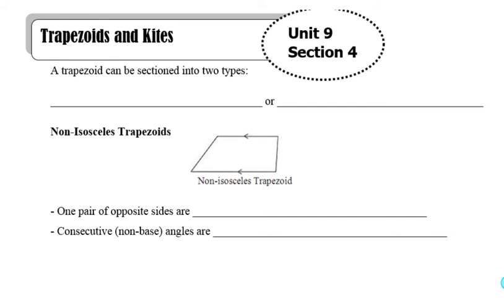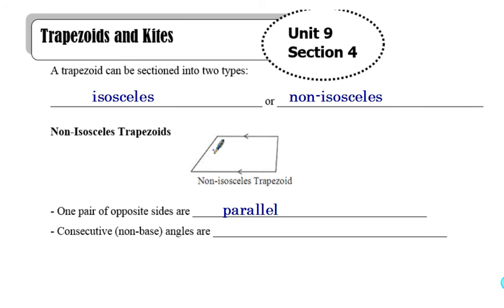A trapezoid can be broken up into two types: an isosceles trapezoid and a non-isosceles trapezoid. A non-isosceles trapezoid is when you have one pair of opposite sides that are parallel, and then you have two sides known as the legs, and the legs are not congruent to each other. That's what makes it non-isosceles.